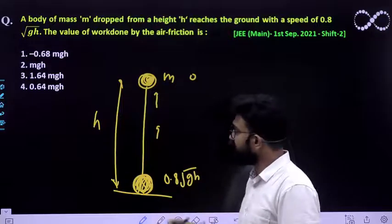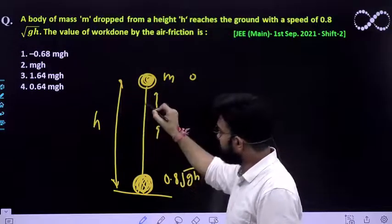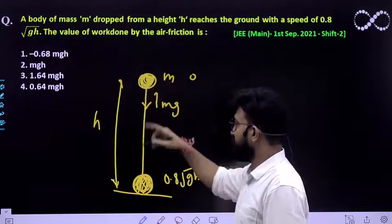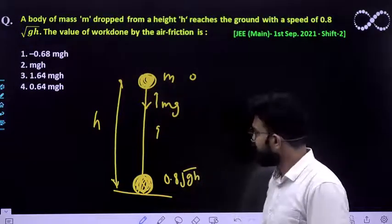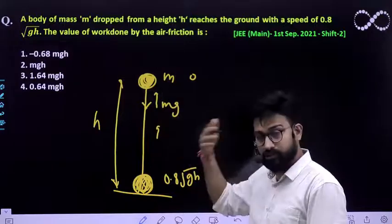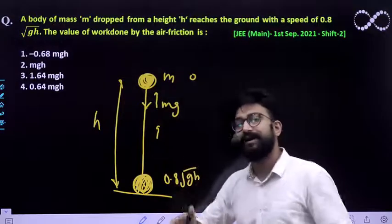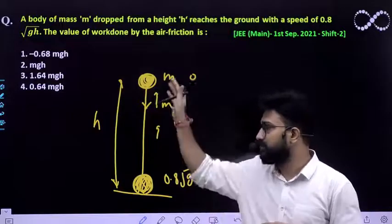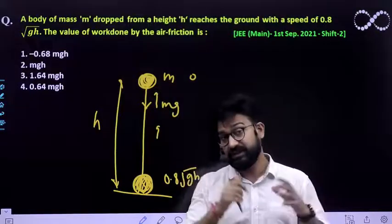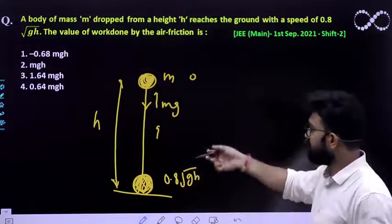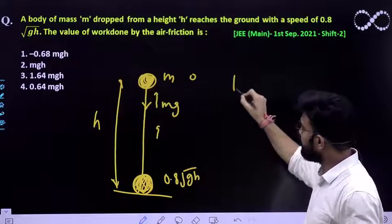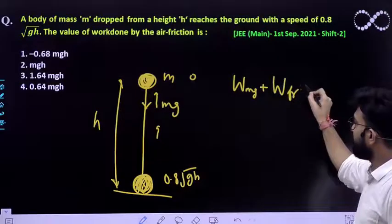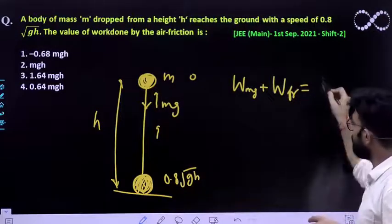So we already know that one more force is there, that is the weight or you can say gravitational force which is also acting on it. So this gravitational force will also do work. So work done by all the forces must be equal to the change in kinetic energy of this particle. That is the work-energy theorem.